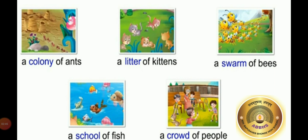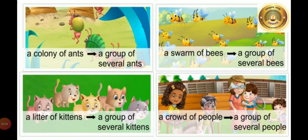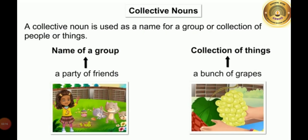A lot of people, animals or things taken together as one unit. For example, a colony of ants is a group of several ants, a litter of kittens is a group of several kittens, a swarm of bees is a group of several bees, a crowd of people is a group of several people. A collective noun is used as a name for a group or collection of people or things. For example, a party of friends refers to a group of friends.